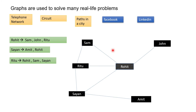Now we can draw some conclusions from here. If I ask who is the mutual friend between Ritu and Rohit, by looking into this picture we can easily tell that Sam and Sam are both friends of Ritu and Rohit. So the mutual friend between Ritu and Rohit is Sam and Sam. This is an example of Facebook where relationships are maintained by friendship.